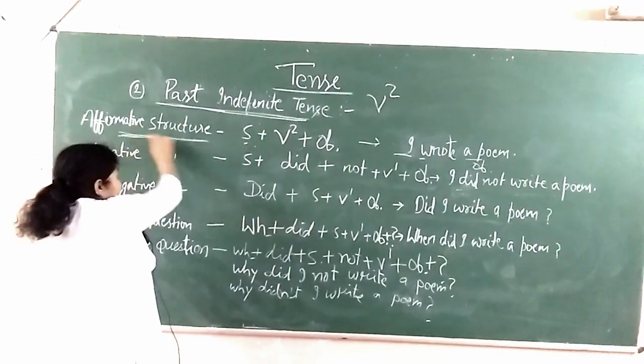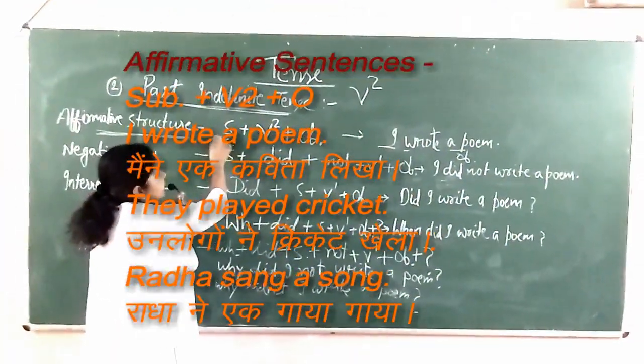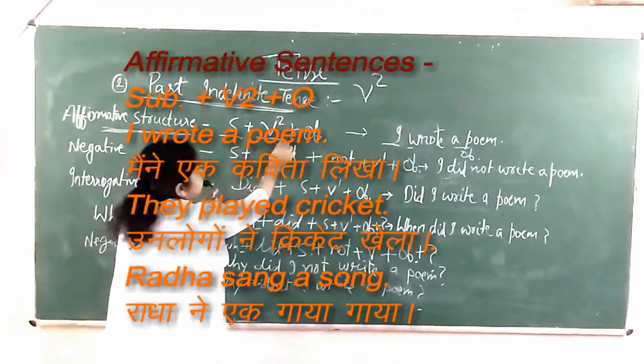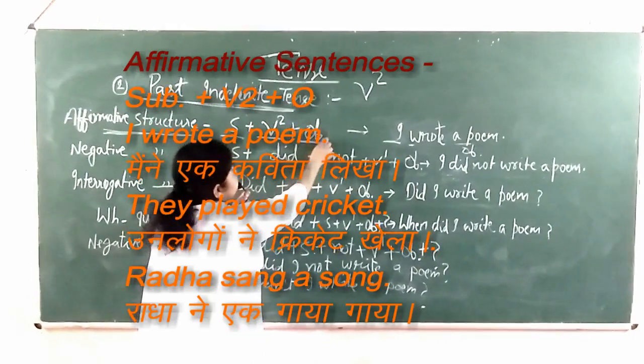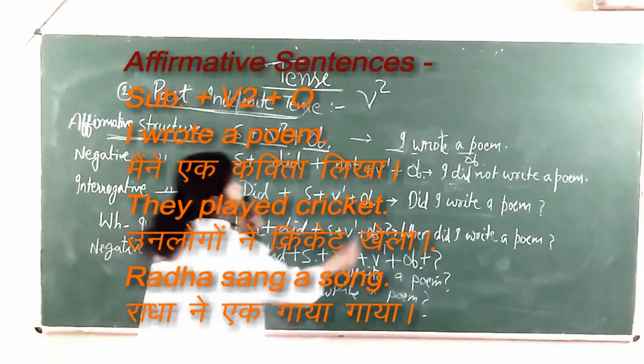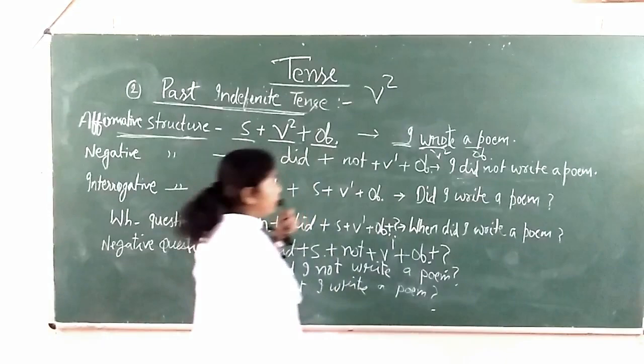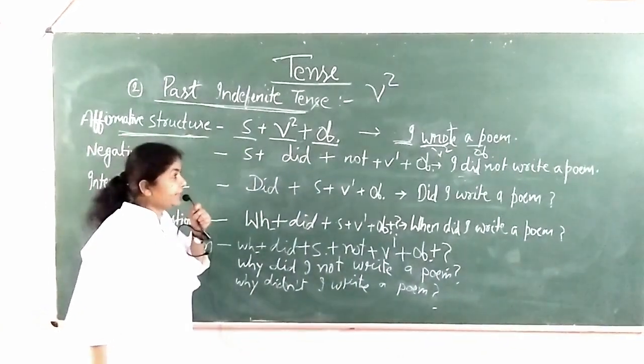First, affirmative sentence. In affirmative sentence the structure is subject, then V2, and then object. Then other words will come. For example, subject is I. I wrote a poem. Maine ne kavita likhi.